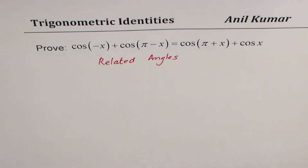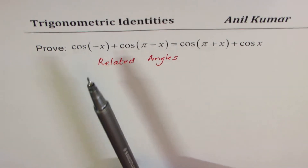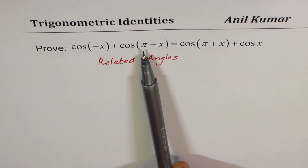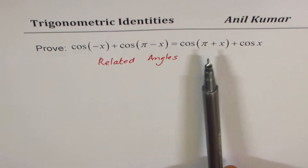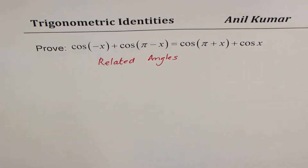I'm Anil Kumar and in this video I'll take up three examples where related angles will be used to prove trigonometric identities. The first one is: cos(-x) + cos(π - x) = cos(π + x) + cos(x).